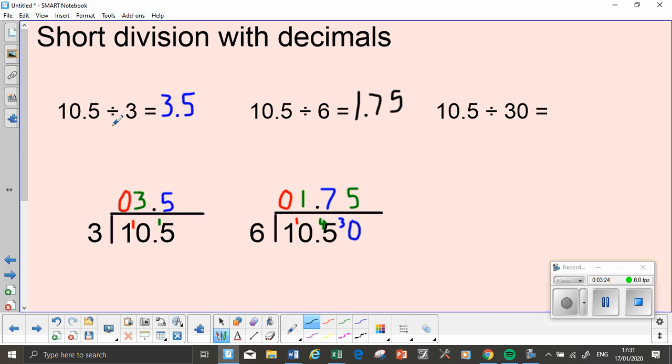If you ever get one where your divisor, the number you're dividing it by, is double, the answer is going to be half.